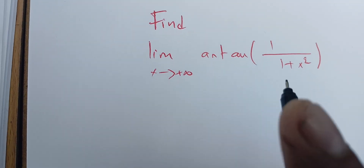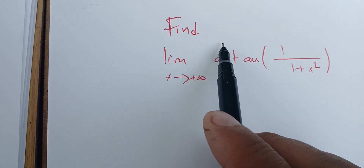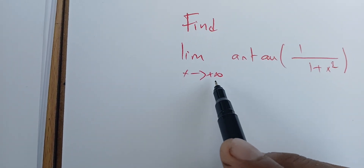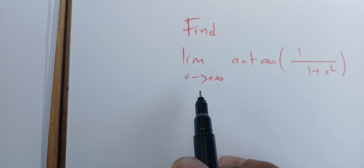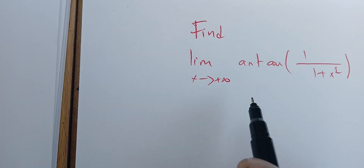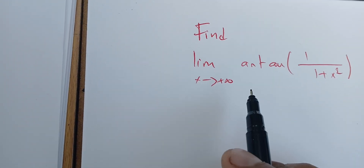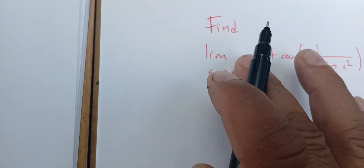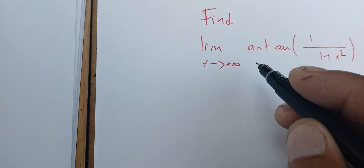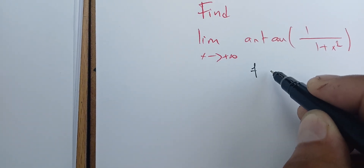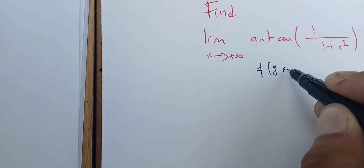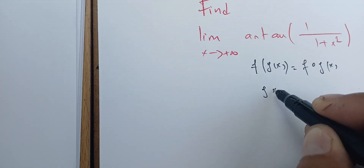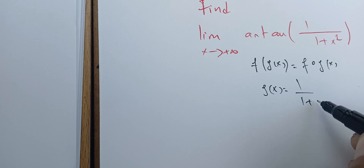The aim of this video is to find the limit of the arc tangent of 1 over 1 plus x squared as x goes to infinity. We have two functions — in fact this is a composite function. Setting aside the limit for now, we can write this as f of g of x, where g of x is 1 over 1 plus x squared.